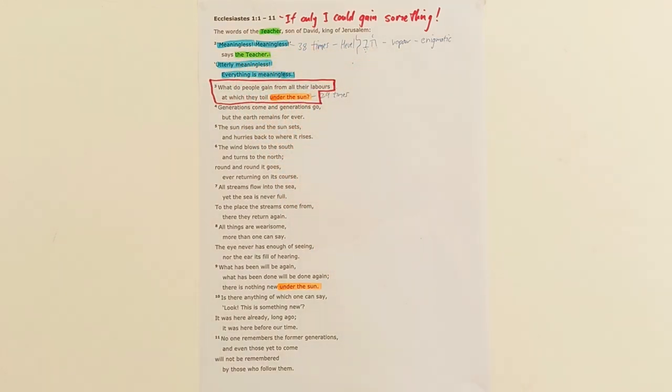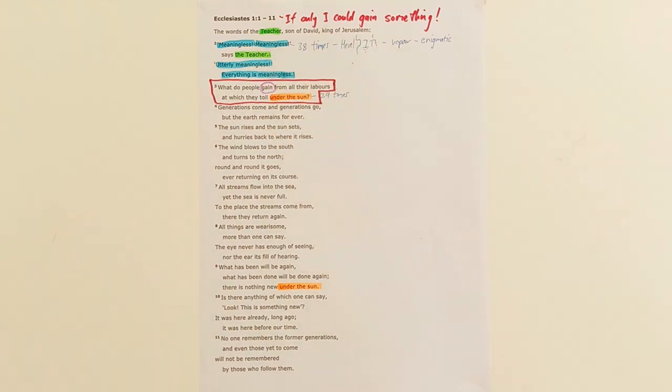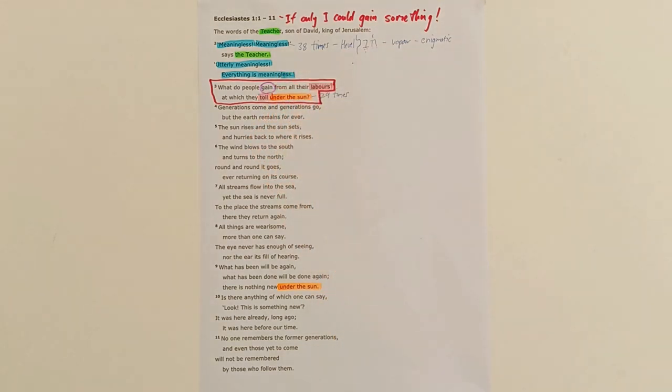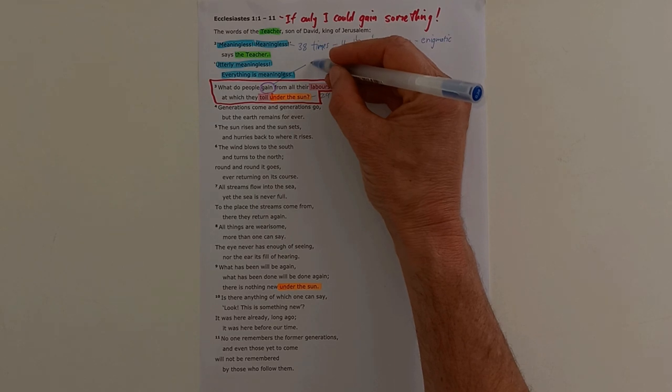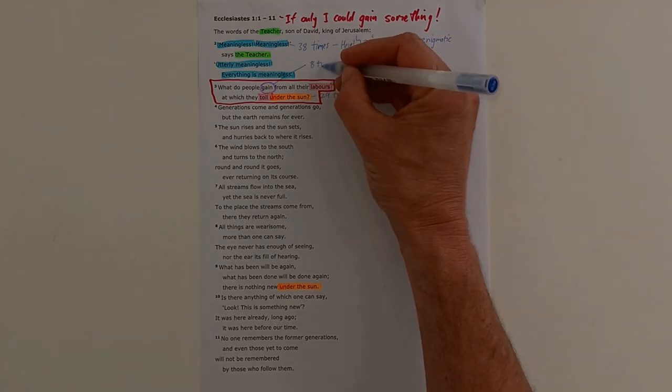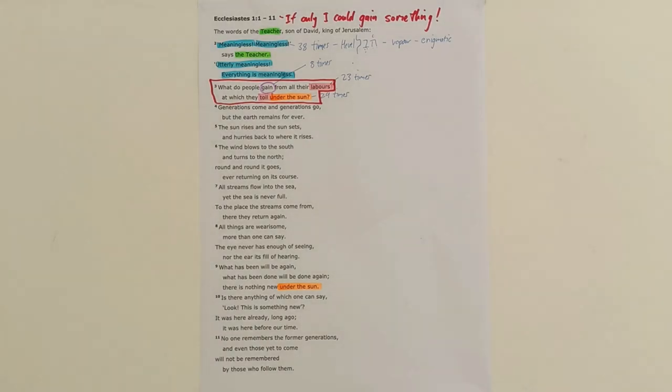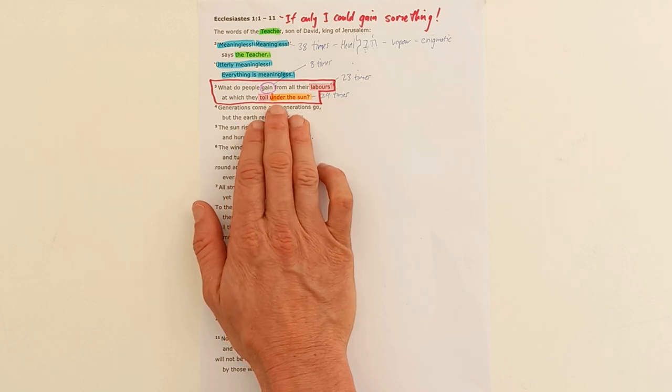The key question that Mr. Teacher is dealing with in this opening section is here in verse 3: What do people gain? What is there to be gained from all our labors? That's also another important word in Ecclesiastes—toil or labor. That word is used 23 times in the book of Ecclesiastes. What is to be gained? The idea of gaining is used 8 times.